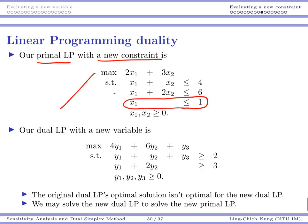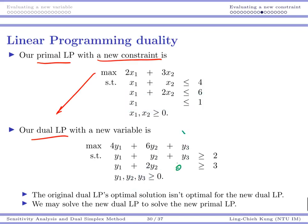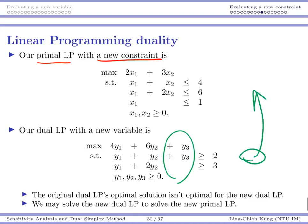The variable y3 corresponds to the third primal constraint. y3 should again be non-negative, and for y3 the coefficients are one, zero, one, zero, one, zero, and the right-hand side value becomes its objective coefficient. This is how we get the dual linear program for the new problem. We can see that we have a new variable, and what's even better is that the optimal solution of the primal is also the optimal solution of the dual — solving the dual is the same as solving the primal.